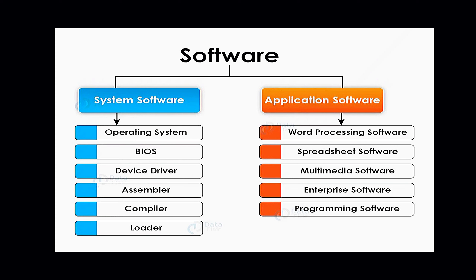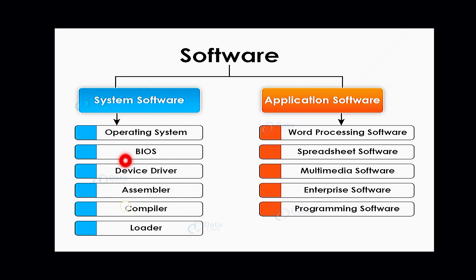If we talk about software categories, basically software is divided into two categories: one is system software and the second one is application software. System software includes the operating system, BIOS (basic input-output system), device drivers, assembler, compiler and loader.